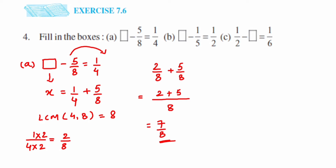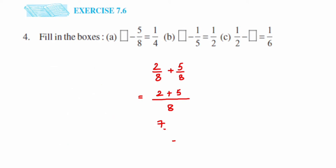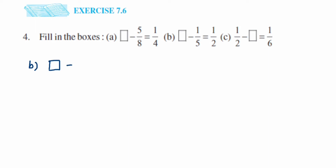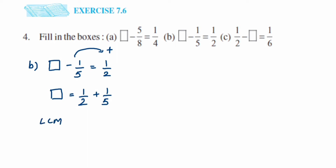Now let's move to the second question. Problem B is: blank minus 1 upon 5 is equal to 1 upon 2. It's similar to the first one — we're going to transpose minus 1 upon 5 to the other side. So: 1 upon 2, and minus will become plus 1 upon 5. Again, they are unlike fractions, so we need to make the denominators the same.